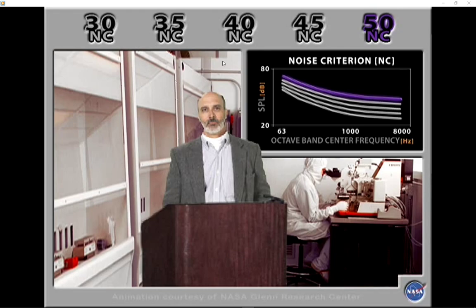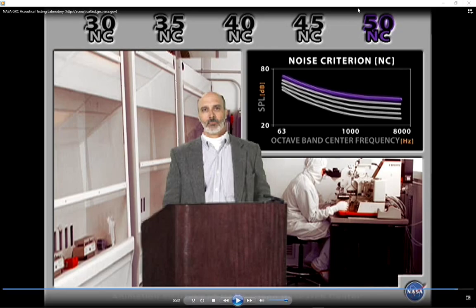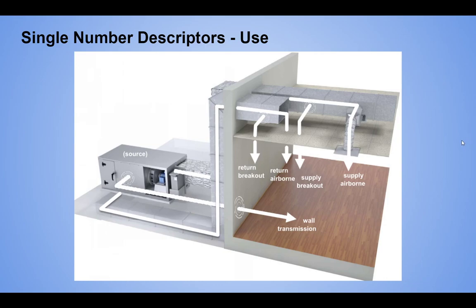NC is useful when working with a client. For example, if you need to move mechanical equipment away from an acoustically sensitive room to bring background noise to a proper level for education, you can say: your existing classrooms are NC 35 right now — very quiet background noise for a classroom — but the cost-saving approach raises that up to NC 50. You can use those objective measures to make the case.